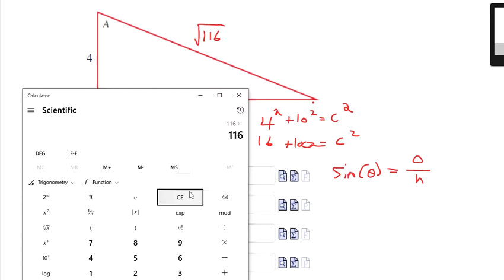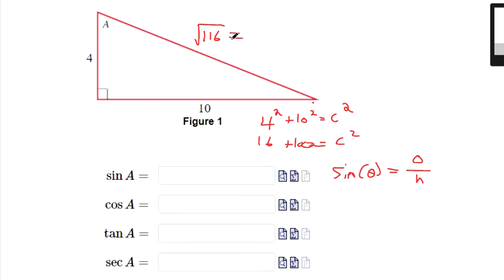If I take 116, if I divide it by 4, I get 29. So look, this is the same as the square root of 4 times the square root of 29. And the whole reason I pulled out a 4 is because I know what the square root of 4 is. It's 2. So that's the simplified version of the hypotenuse here.